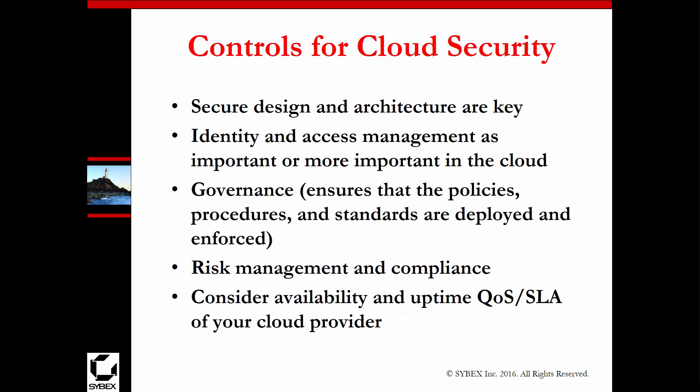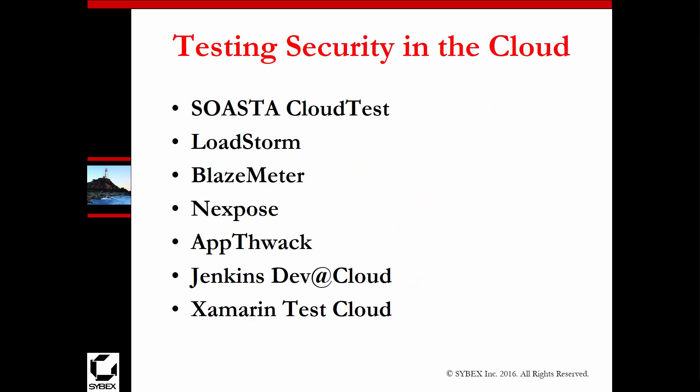Certain cloud controls are important. Secure design and architecture are really critical here — being able to apply the CIA triad: confidentiality, integrity, and availability. Making sure that there are certain policies, procedures, and other governance items in place for control of cloud-based security. Risk management and basic compliance matter as well, depending on the data you're dealing with. Also think about availability — things like QoS and service level agreements, uptime, and what those actually mean.